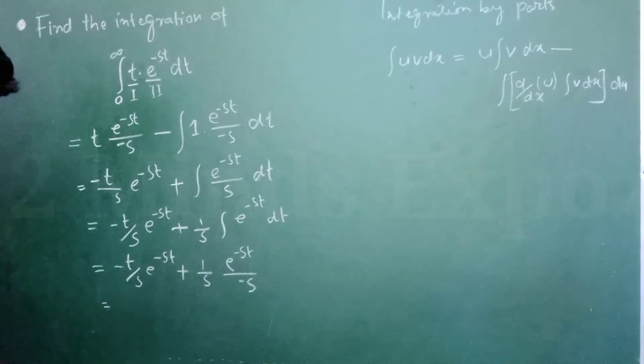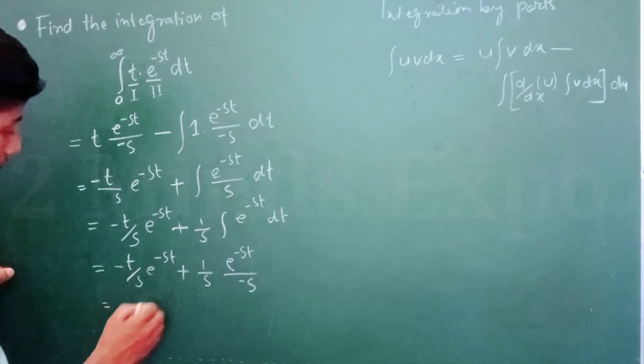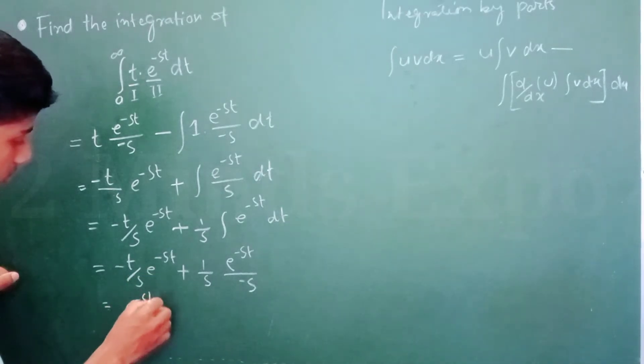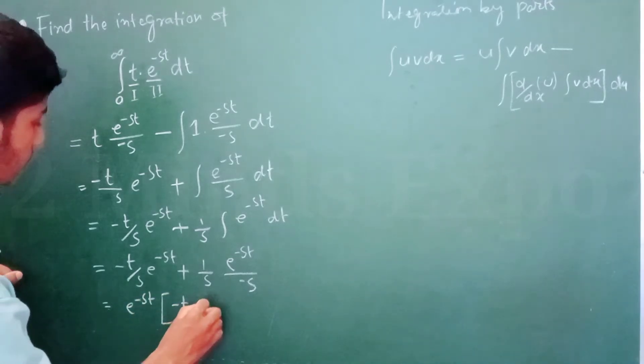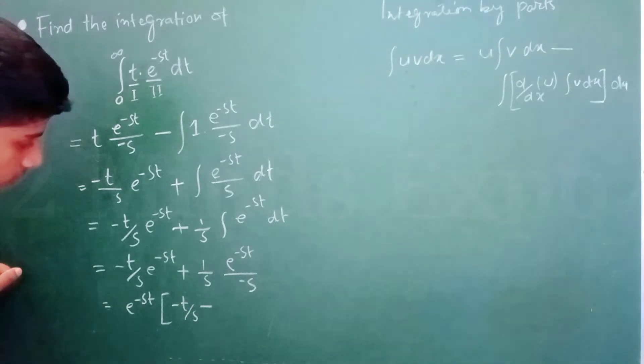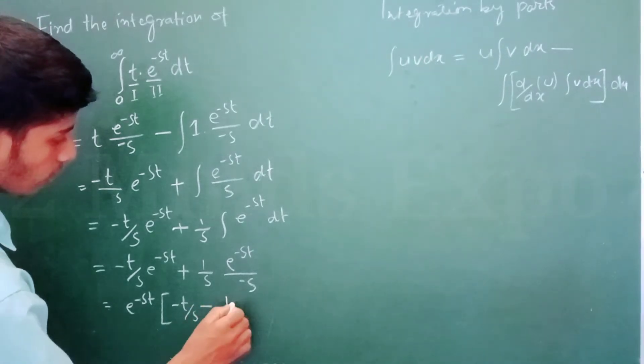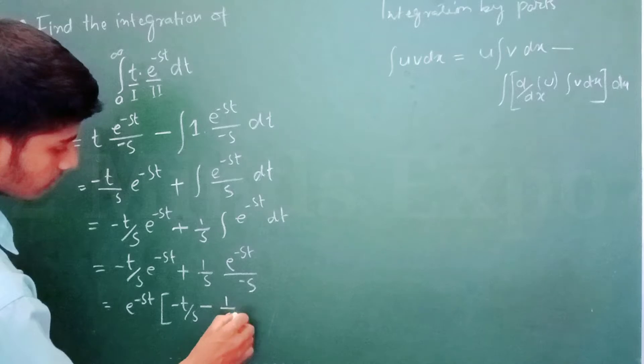So if we take common e to the power minus ST, then minus T by S minus 1 by S square.